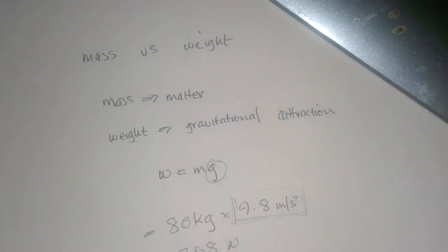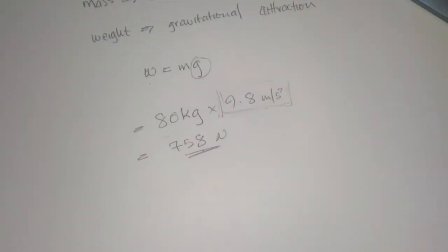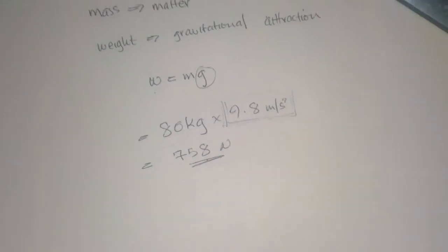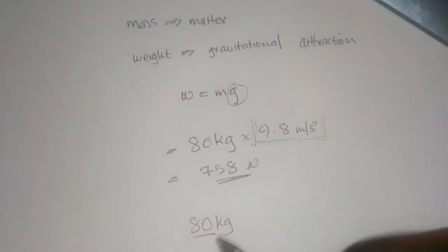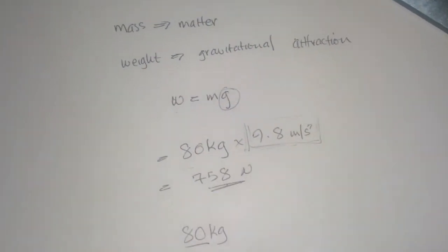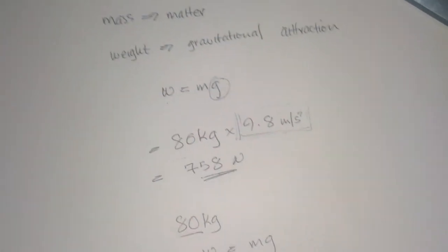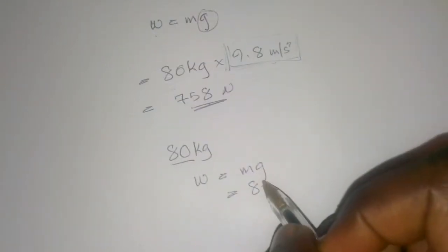Which means if I went to another planet, or if I went to the moon, I would weigh differently, even though I have the same mass and that hasn't changed. Using the same formula, I weigh 80 kg.